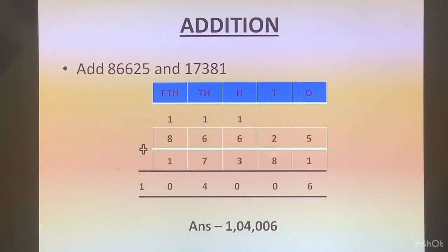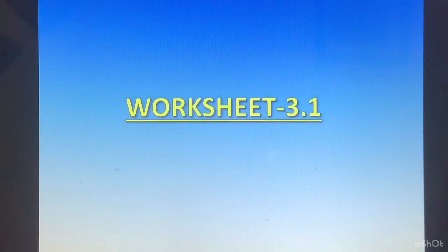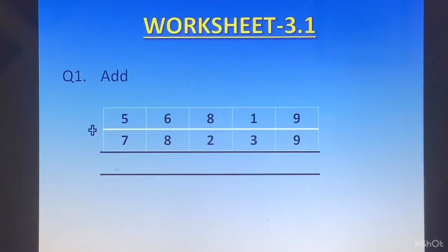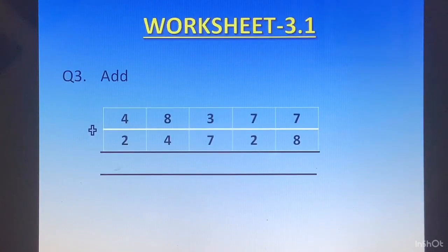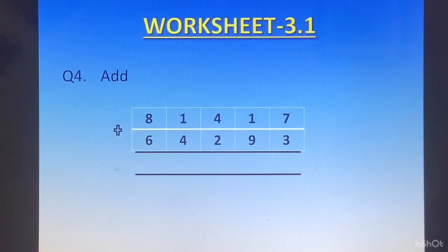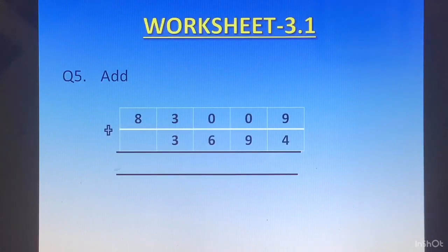Let us do a few sums to enhance our understanding and get good practice. Worksheet 3.1: Question 1 — add 56819 and 78239. Question 2 — 27118 plus 14599.